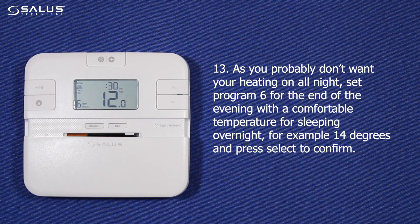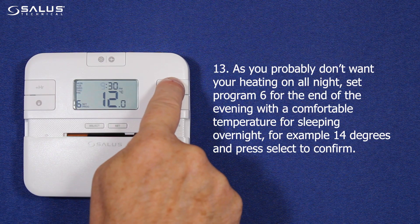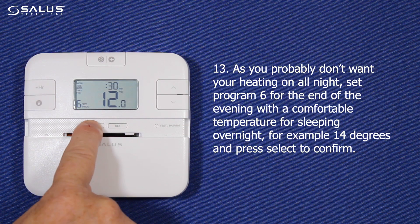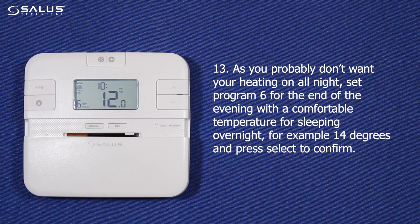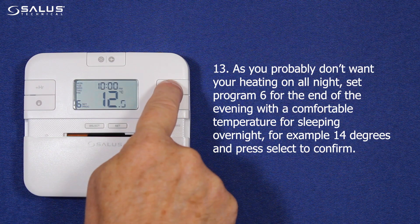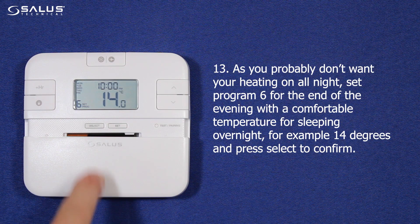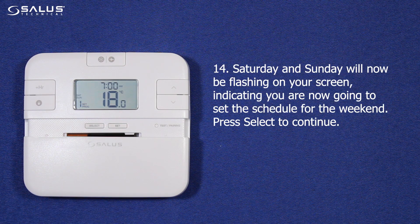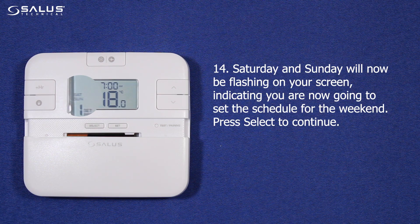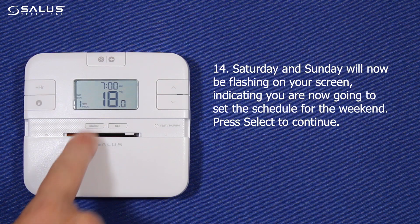Step 13: As you probably don't want your heating on all night, set program 6 for the end of the evening with a comfortable temperature for sleeping overnight, for example 14 degrees. Press select to confirm. Step 14: Saturday and Sunday will now be flashing on your screen, indicating you are now going to set the schedule for the weekend. Press select to continue.